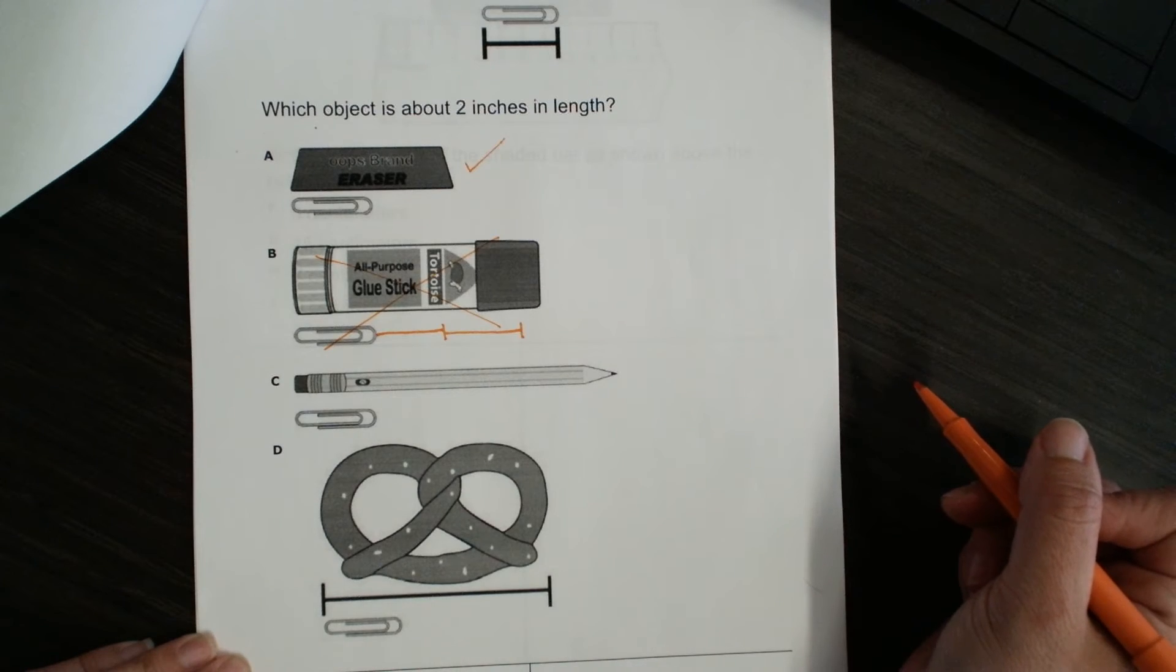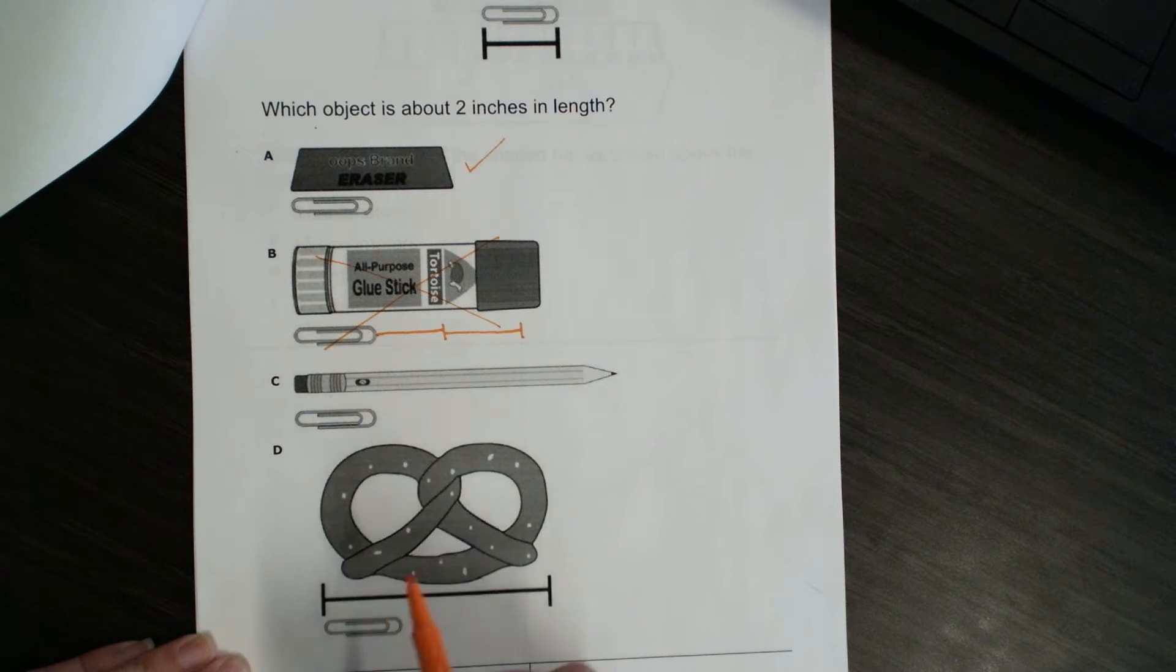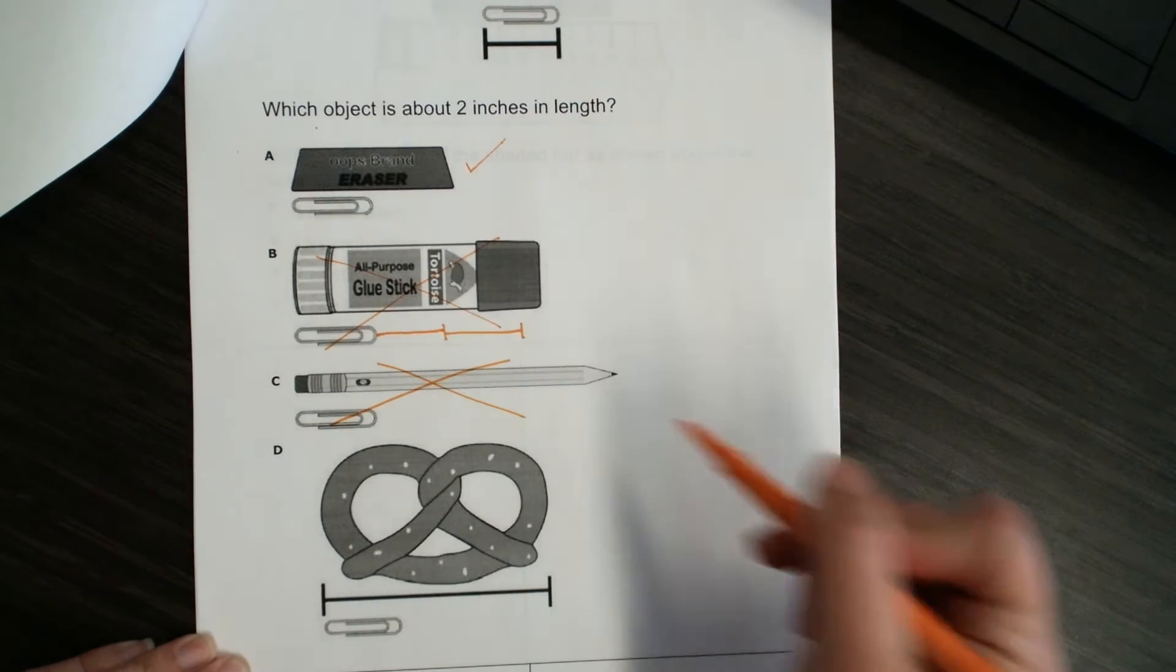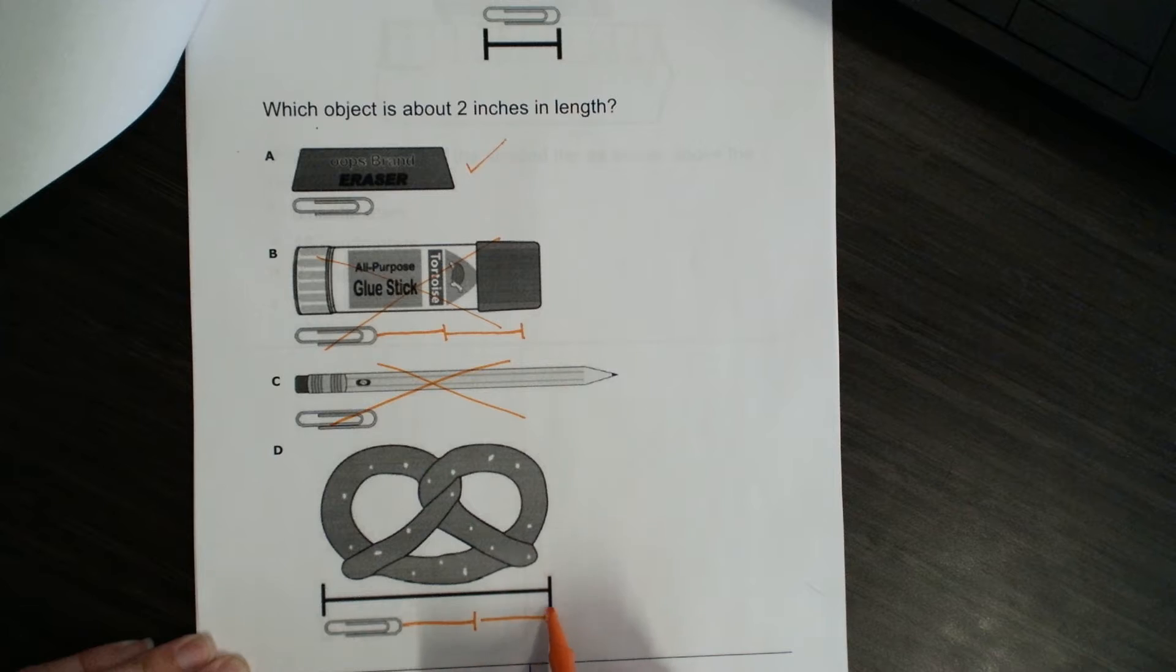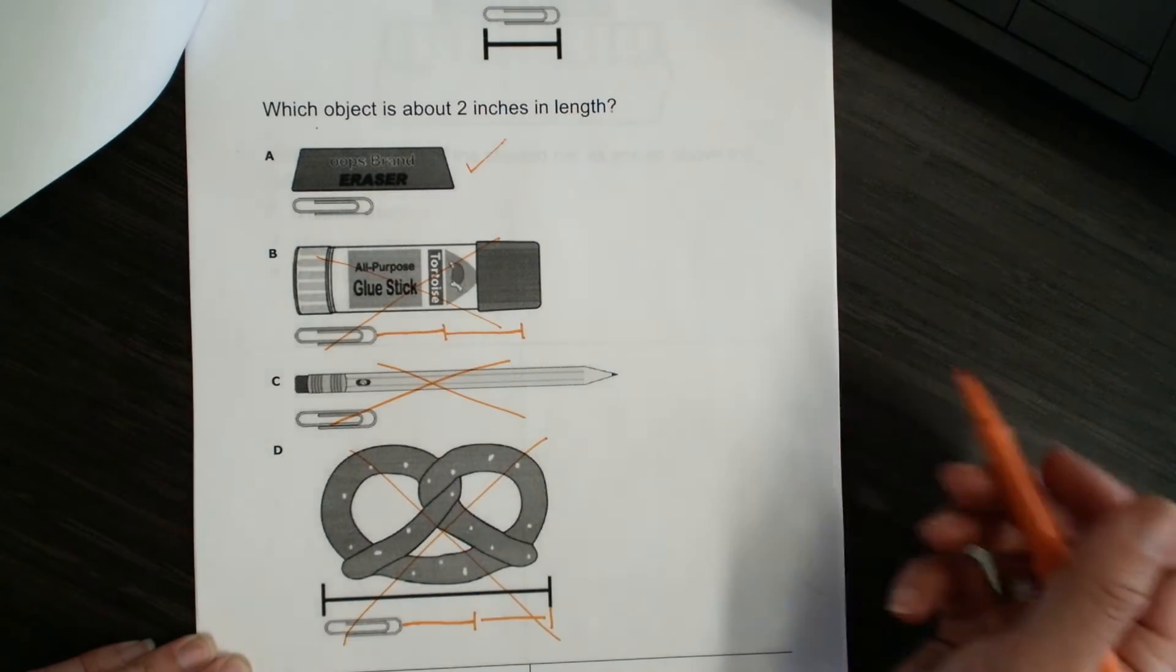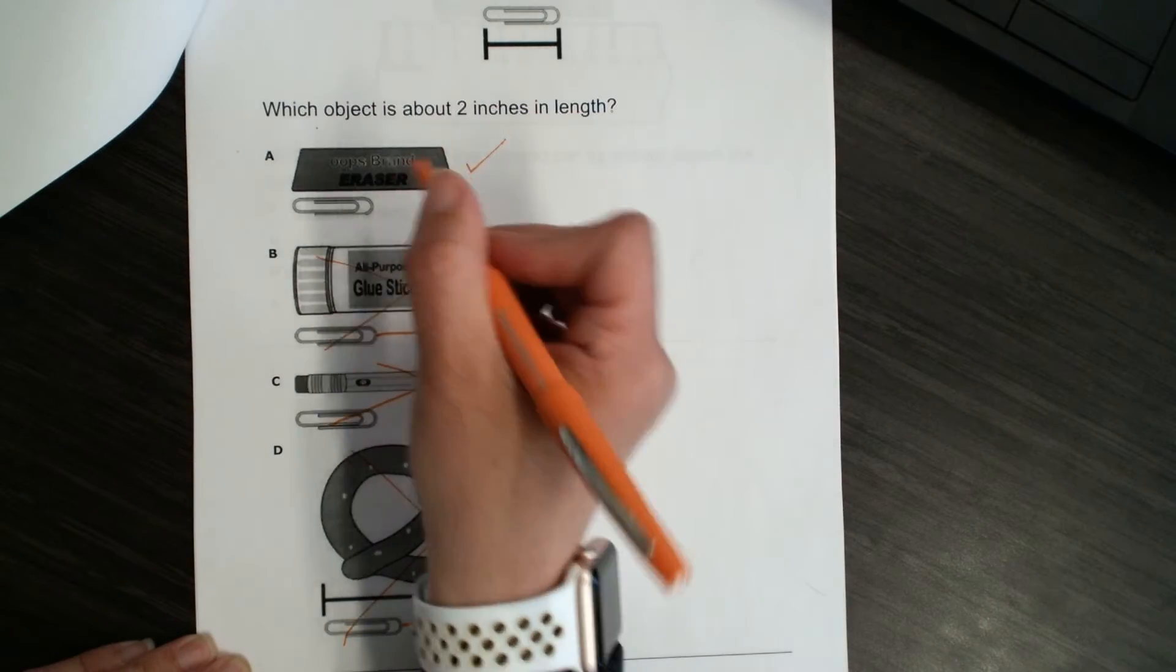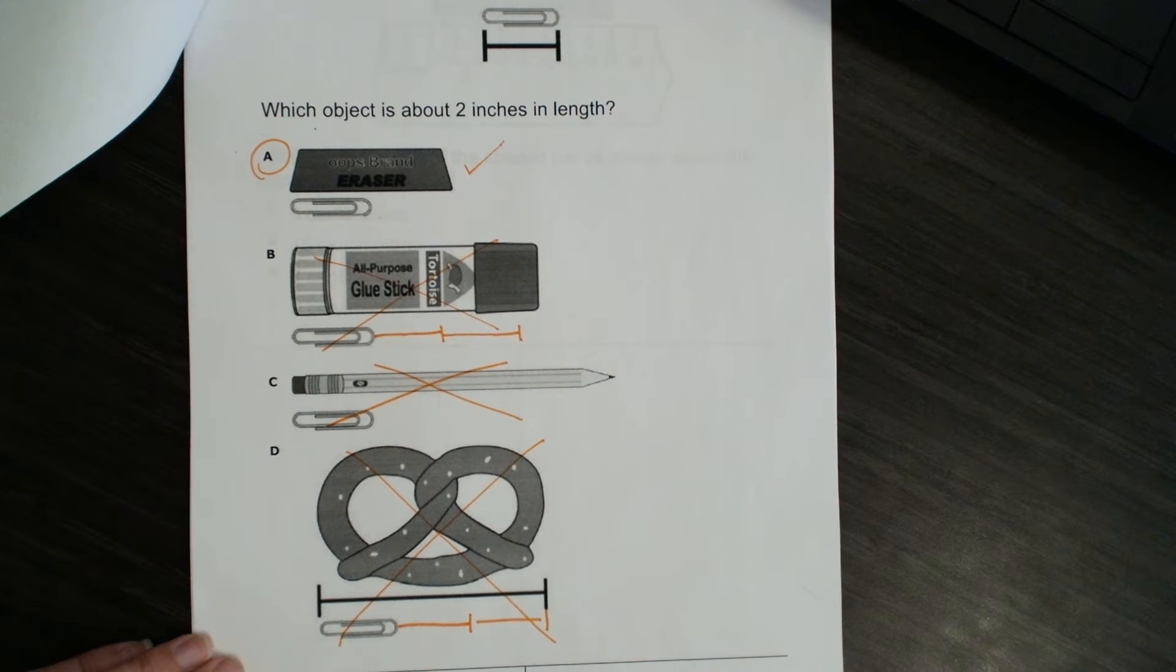I think no to the glue stick. I think it's more than two. Okay, I can tell that we're going to need several paper clips for the pencil. So, it's not the pencil. And what about the pretzel? Let's see. If I just think in my head about here and here, I think that one's pretty close to the glue stick, so that one won't work either. So, our answer is eraser. It would take about two paper clips to measure that eraser.